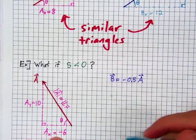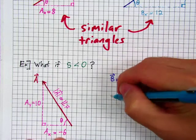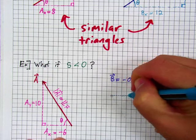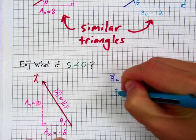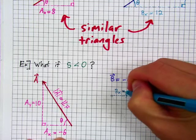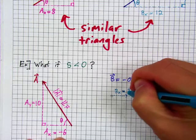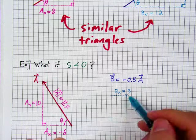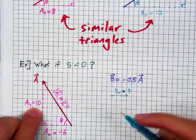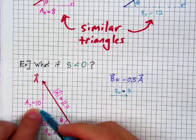If ax is negative 6, then bx will be plus 3. bx is plus 3. Negative 0.5 times negative 6 gives us plus 3. If ay is 10, then by is negative 0.5 times 10.